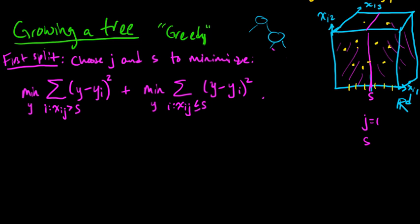So that's the first step, the first split. We choose this s and j, and maybe, say it's this one, say we get this one. Now that determines our first node.